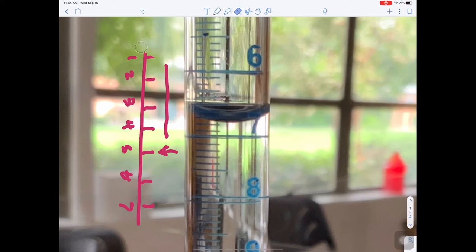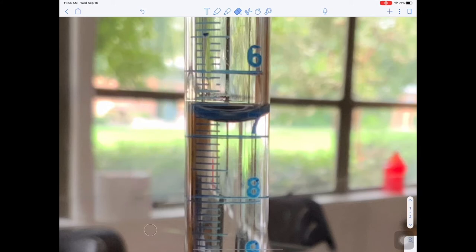So when we read a burette, we just use the numbers as if they were a ruler. So we're looking at the bottom of the meniscus, the curved part here. And because of the colors behind it, we can see it's dark because it's reflecting some things around it, so that's convenient.